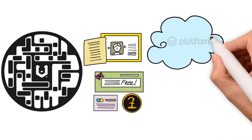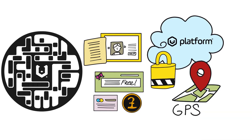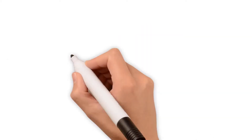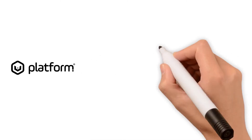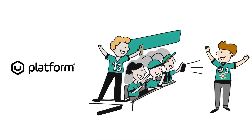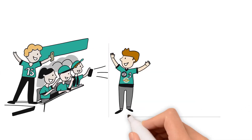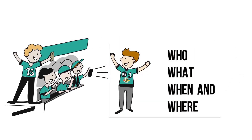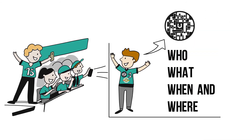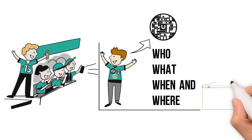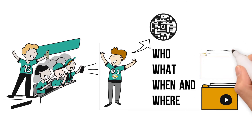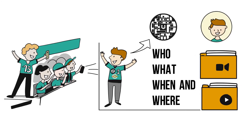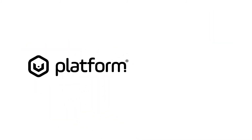What content a Vcode leads to and its permissions can be changed on the fly, without changing the Vcode. The V-Platform provides the user access to permission-based content, taking into account the who, what, when, and where. By scanning a Vcode, the user therefore has access to all online information permitted to them by the creator.